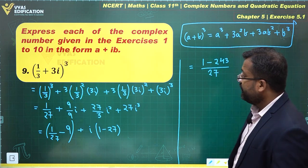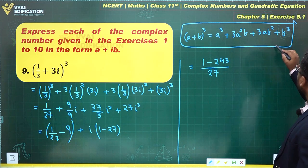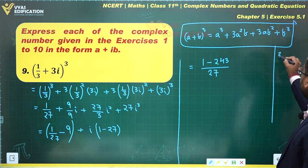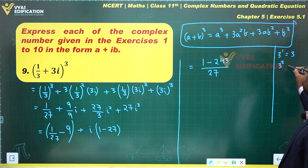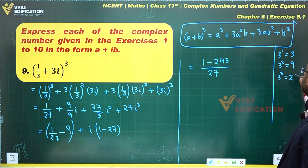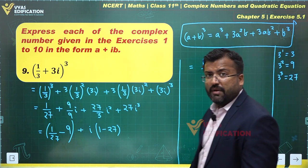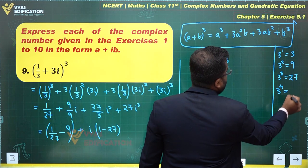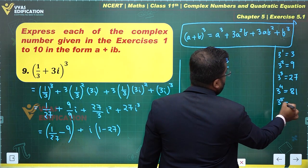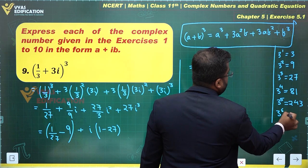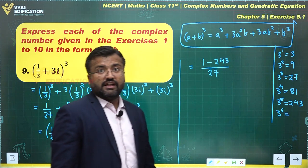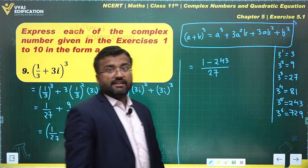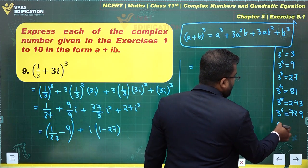Do you remember the powers of 3? Let's recall. 3¹ is 3, 3² is 9, 3³ is 27. Most of you remember this much. Let's say 3⁴—what is it equal to? This is 81. 3⁵ is 243, and at least up till 3⁶. 3⁶ is 729.